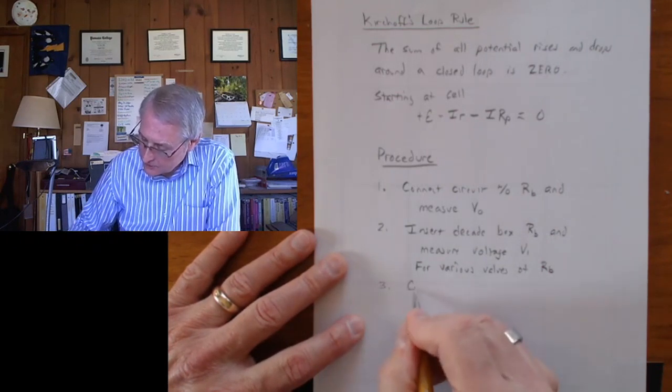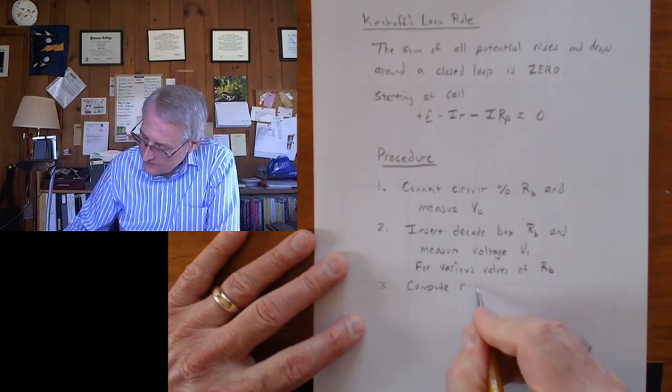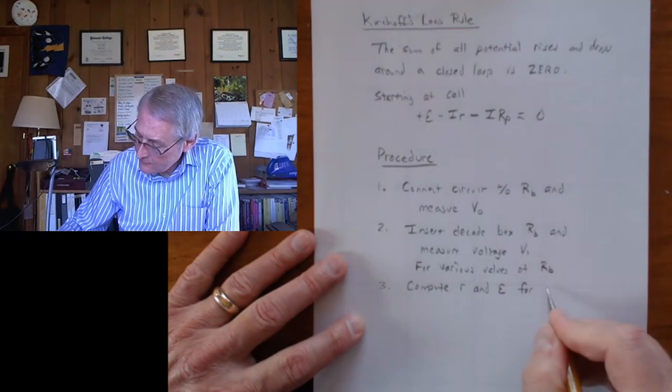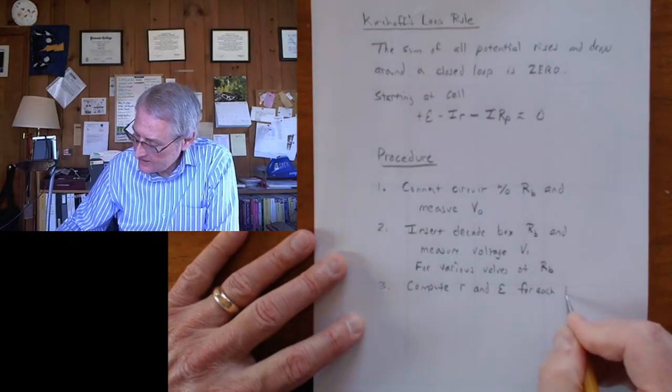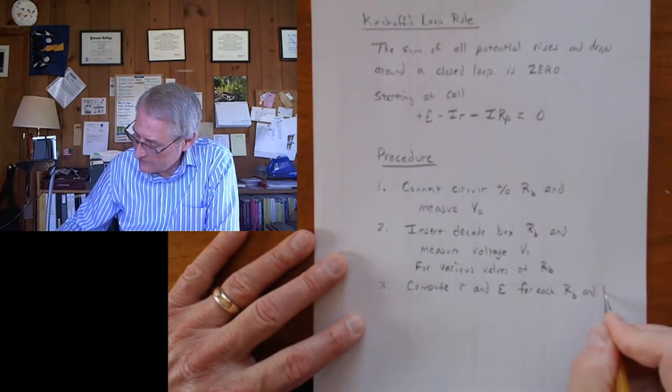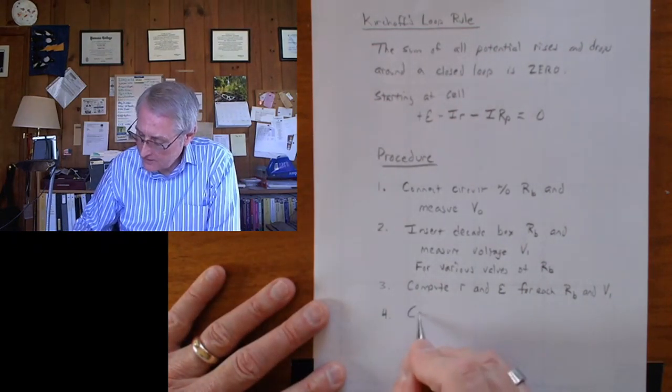From those measurements, you can compute the internal resistance and the EMF of the cell for each pair of values, for each value of whatever the decade box was set at and what value of the voltage you got. And then we'll take those and compute the means.